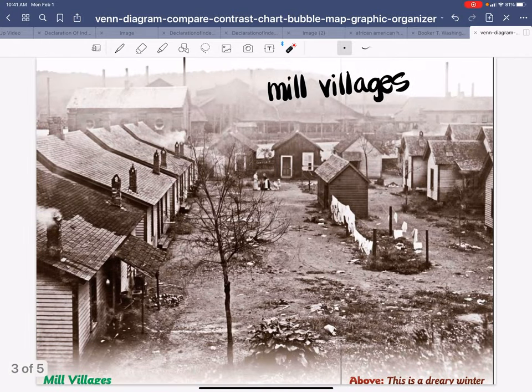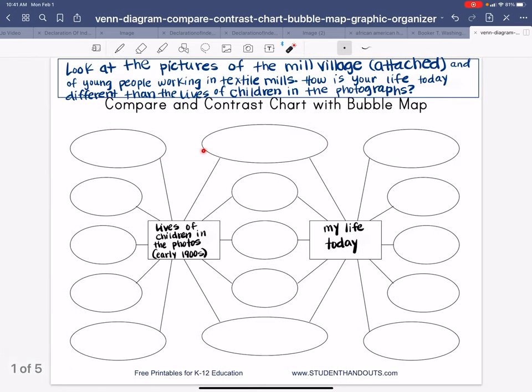These are mill villages. Does this look like somewhere where you might live? These were close to the mill and provided housing for the people that worked at the mills. Do we still have homes like that? Is your home like that? You're comparing and contrasting over here, okay?